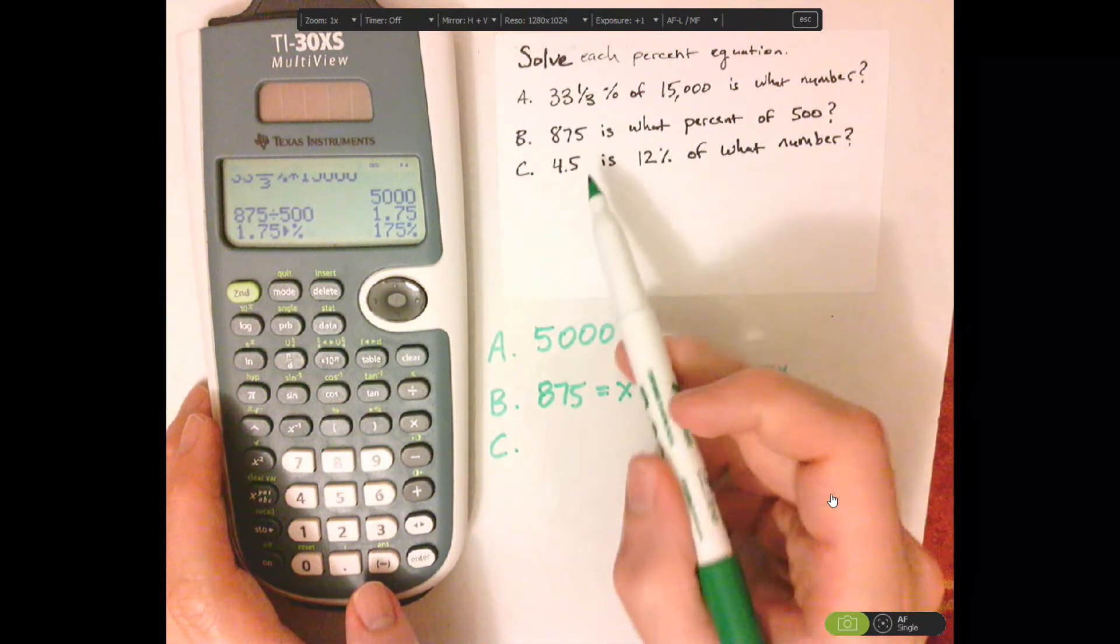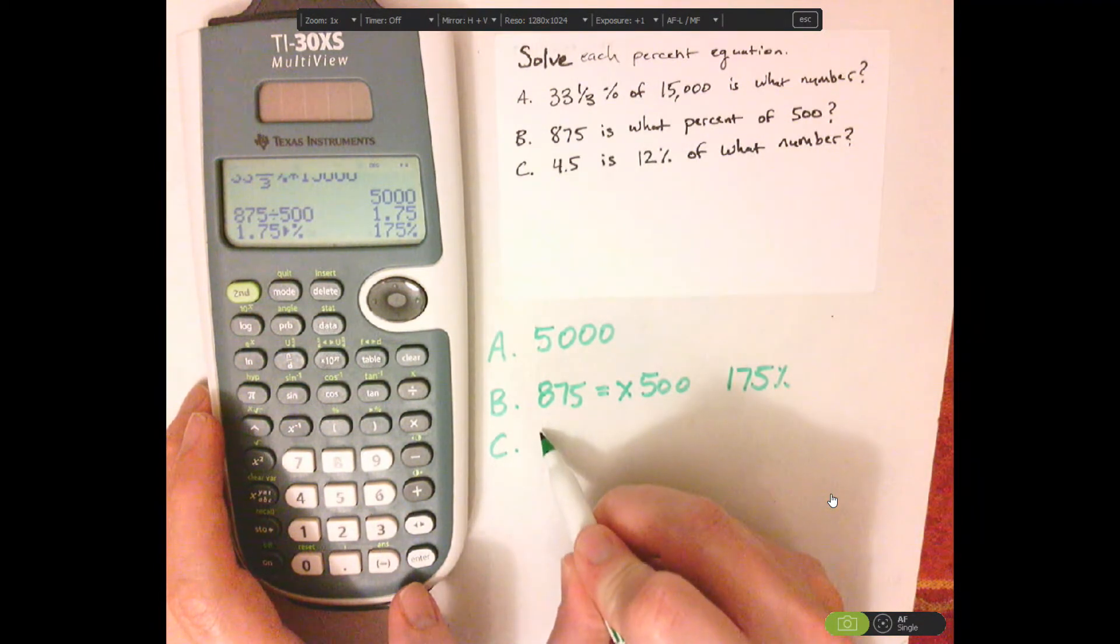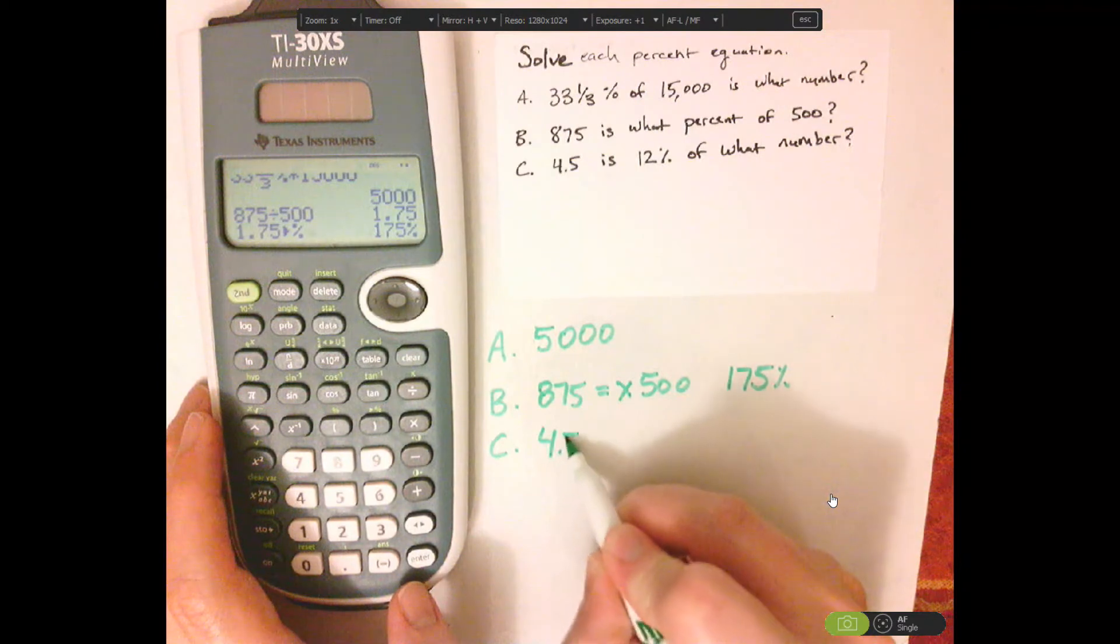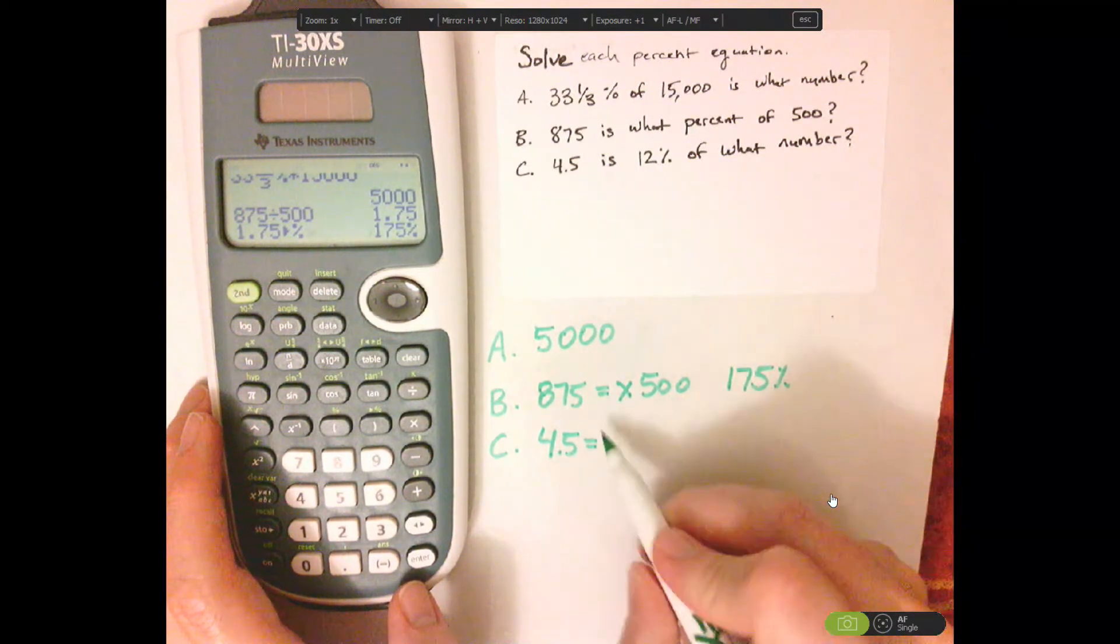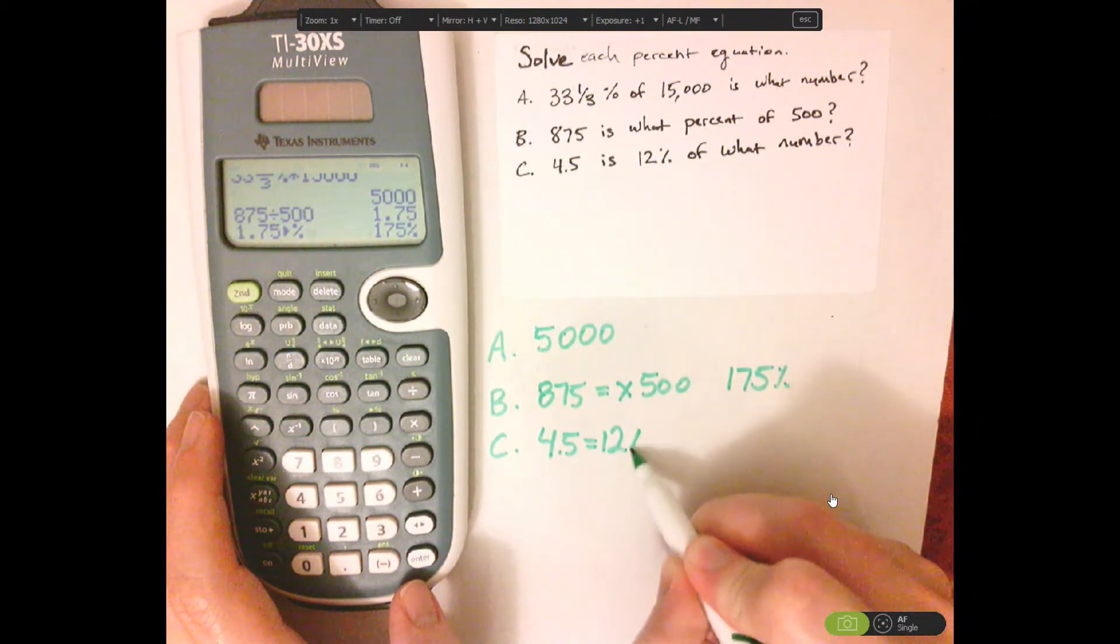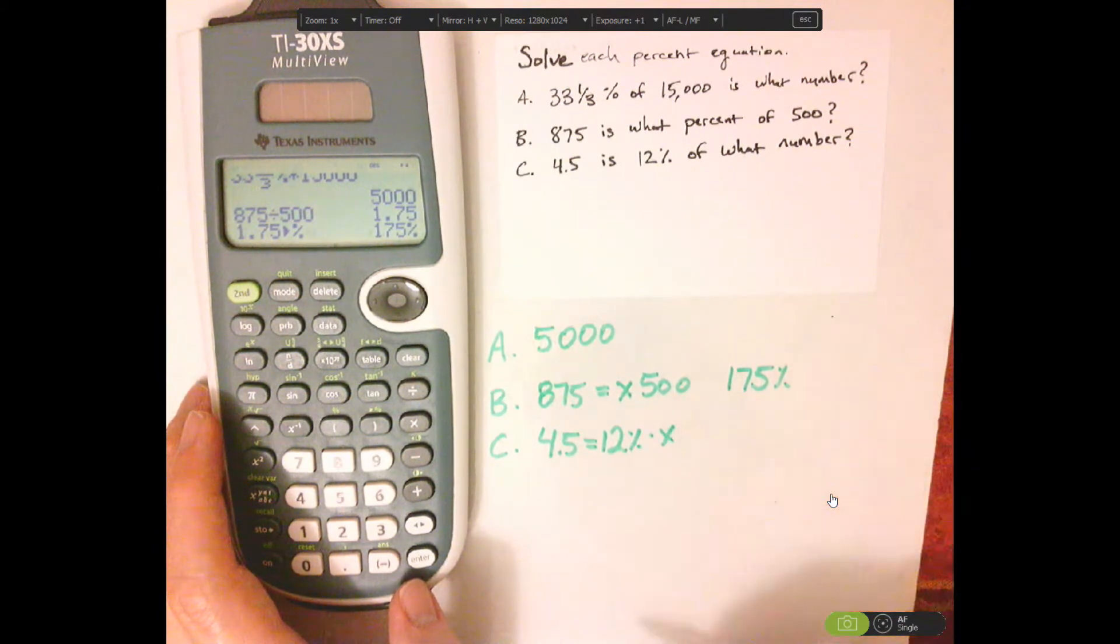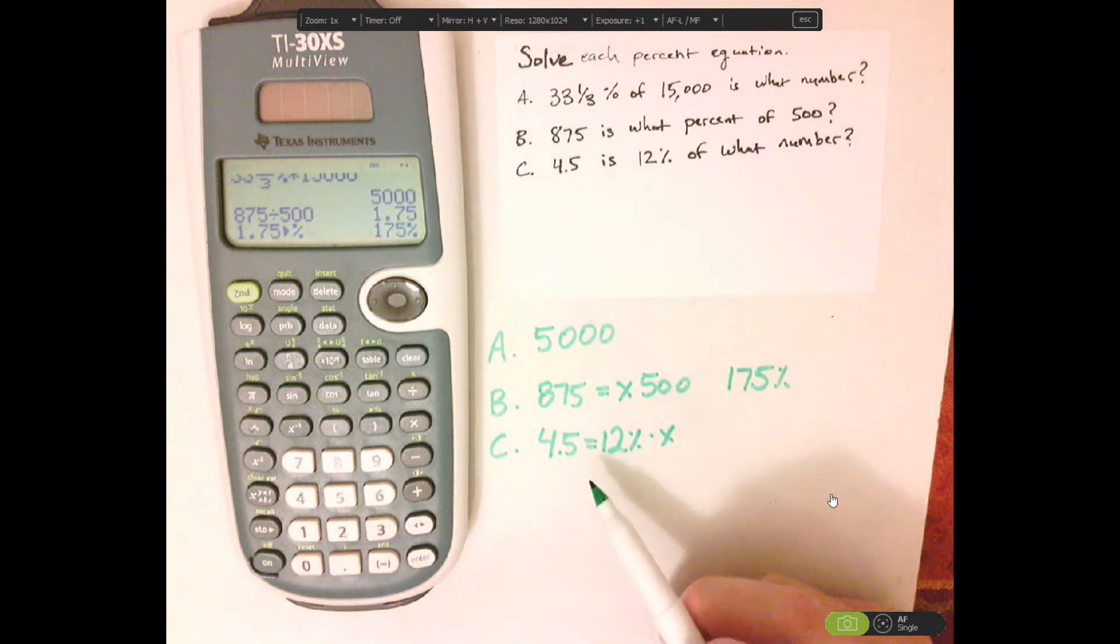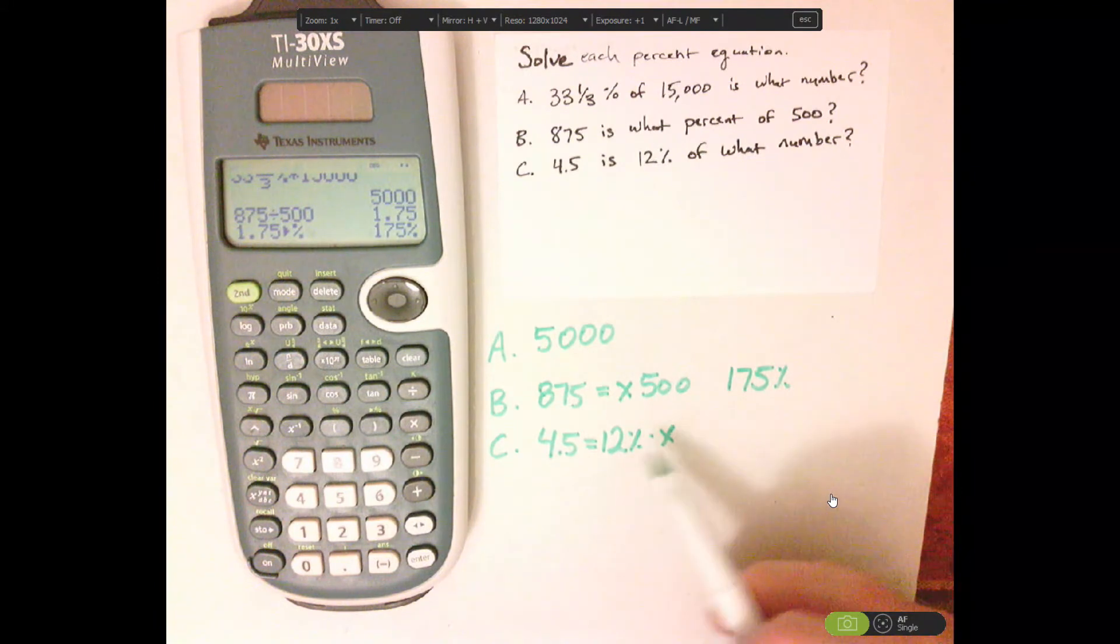For letter C, we have 4.5 equals 12 percent of what number? So notice that we're going to be getting rid of this 12 percent, but we're going to be dividing.